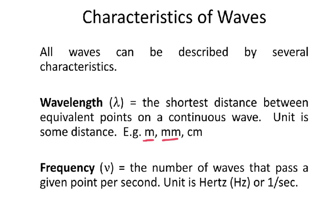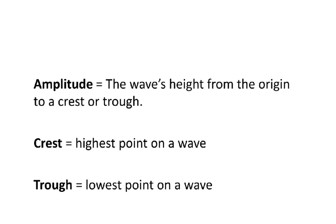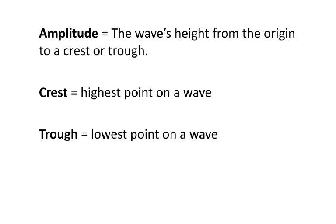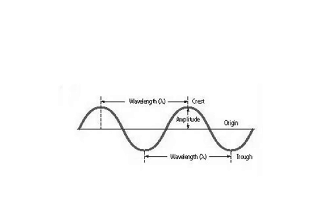Frequency is the number of waves that pass a given point per second — in other words, it's how fast it's going. The unit is hertz or one over seconds. We also have amplitude, which is the wave's height from the origin to a crest or a trough. The crest is the highest point and the trough is the lowest point.